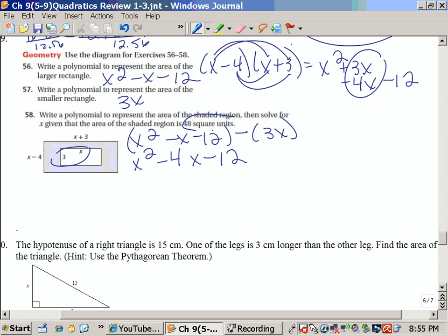Now it says that the shaded region is 48, so I equal 48, and now I'm going to move the 48 to the left-hand side, and that gives me negative 60. Now, the easiest way to do this is by factoring, as long as you can think of something that multiplies to give me 60 and adds to give me 4.